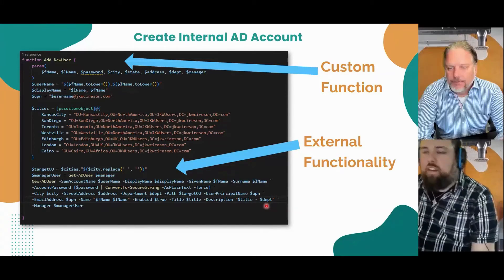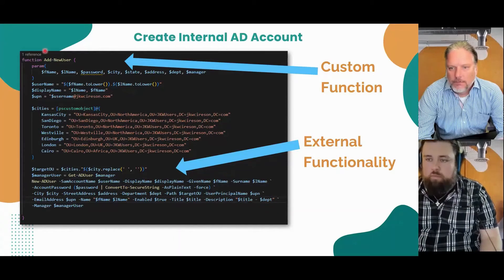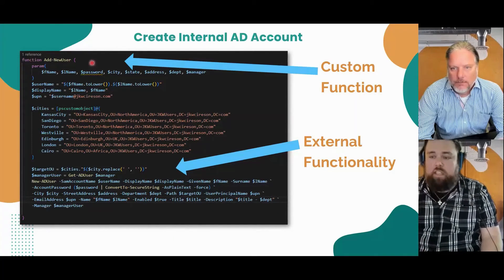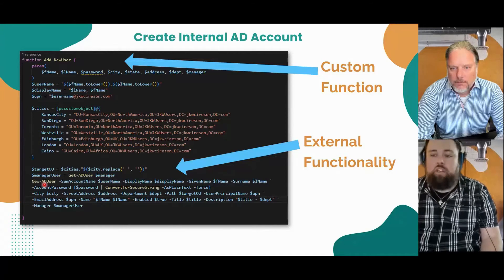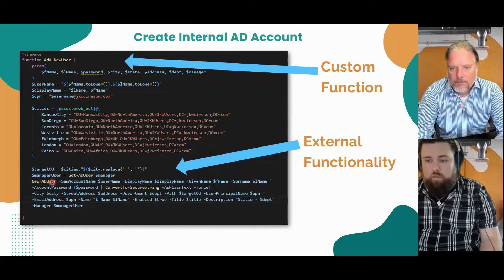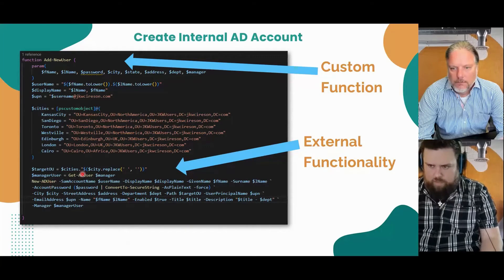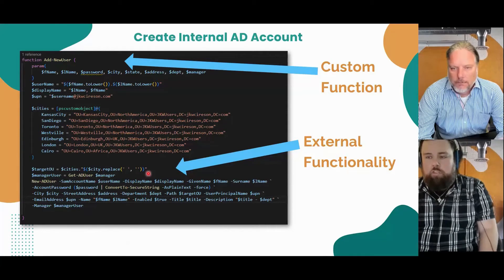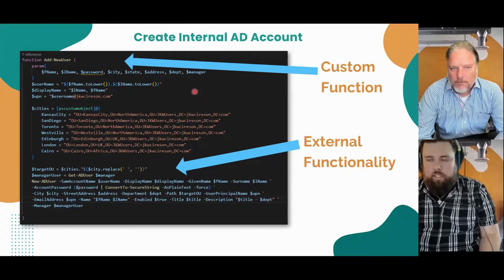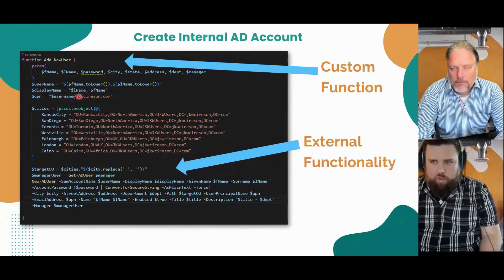I have a custom function that I've declared, wrapped around the external functionality of new-aduser, which is part of the Active Directory module that you can add on Windows servers. Here we have get-aduser and new-aduser, both part of that Active Directory module. The reason I've wrapped this into a custom function is because I have some preprocessing I want to do before handing it off to the new-aduser command.